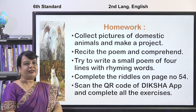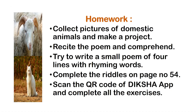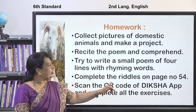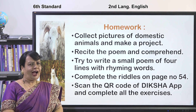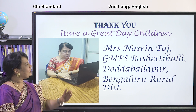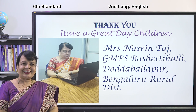We have come to the last part of our lesson — the homework. First: collect pictures of domestic animals and make a project. Second: recite the poem and comprehend it. Third: try to write a small poem of four lines with rhyming words. Fourth: complete the riddles on page 54. Fifth: scan the QR code on the Diksha app and complete all the exercises. Thank you very much. Have a great day, children. This is Mrs. Nasrin Taj, GMPS Bashetti Halli, Dodbalapur, Bengaluru Rural District.